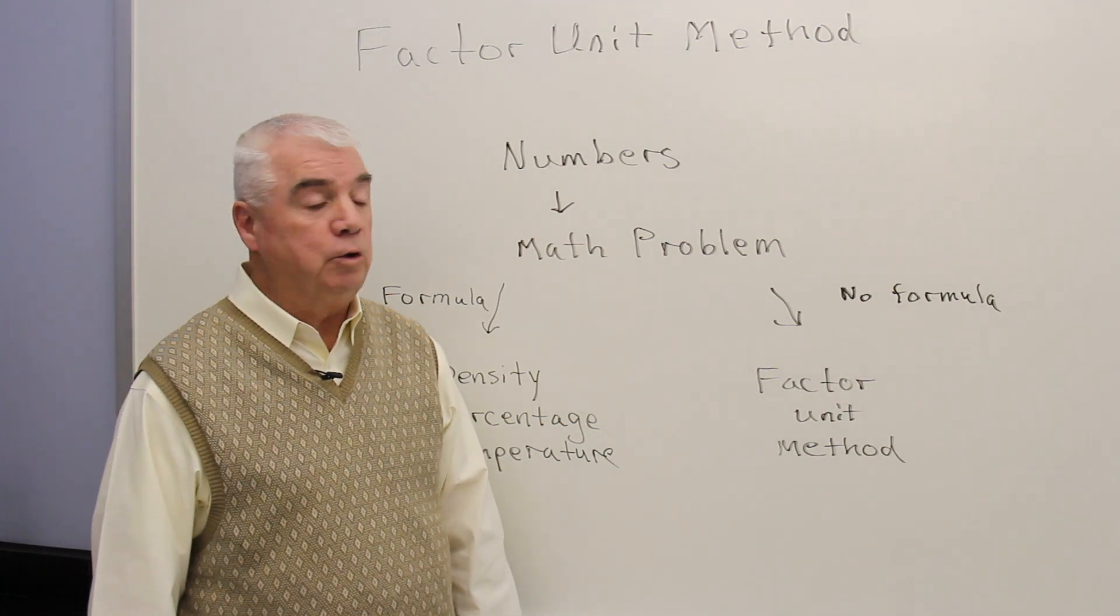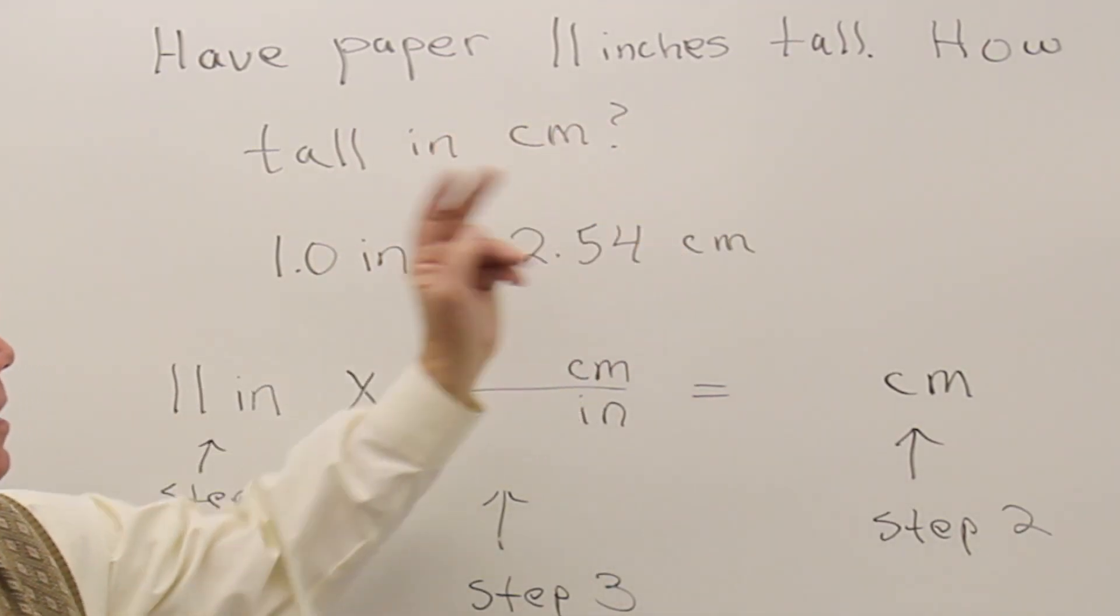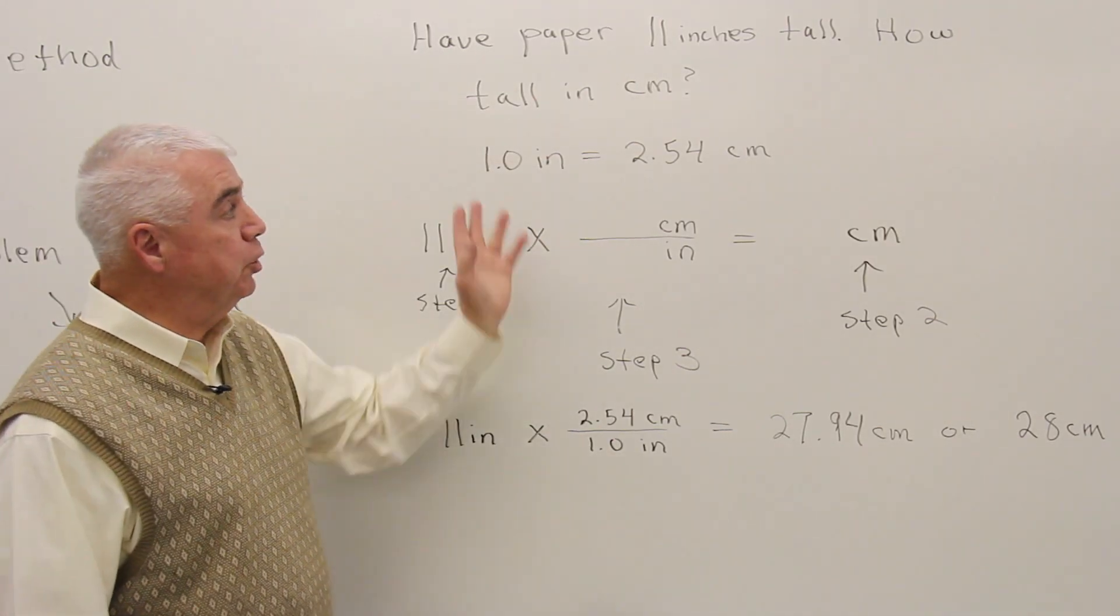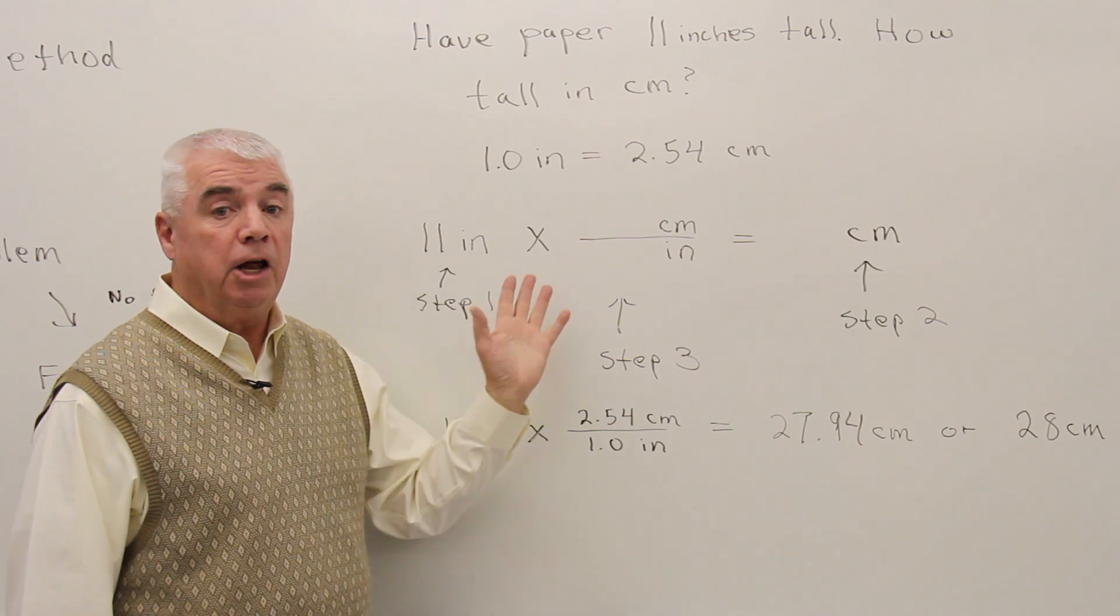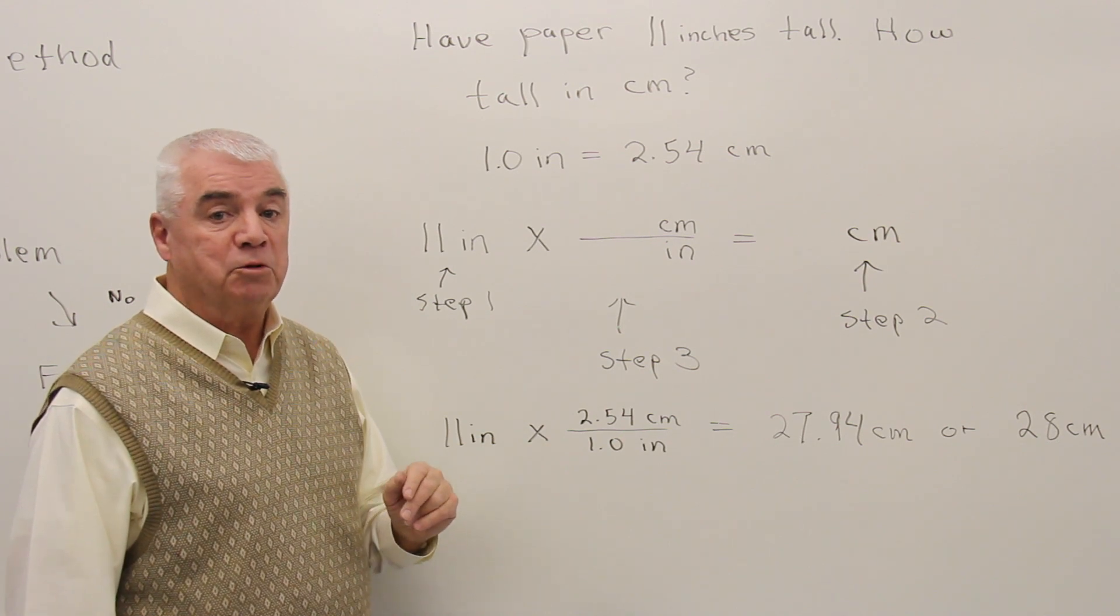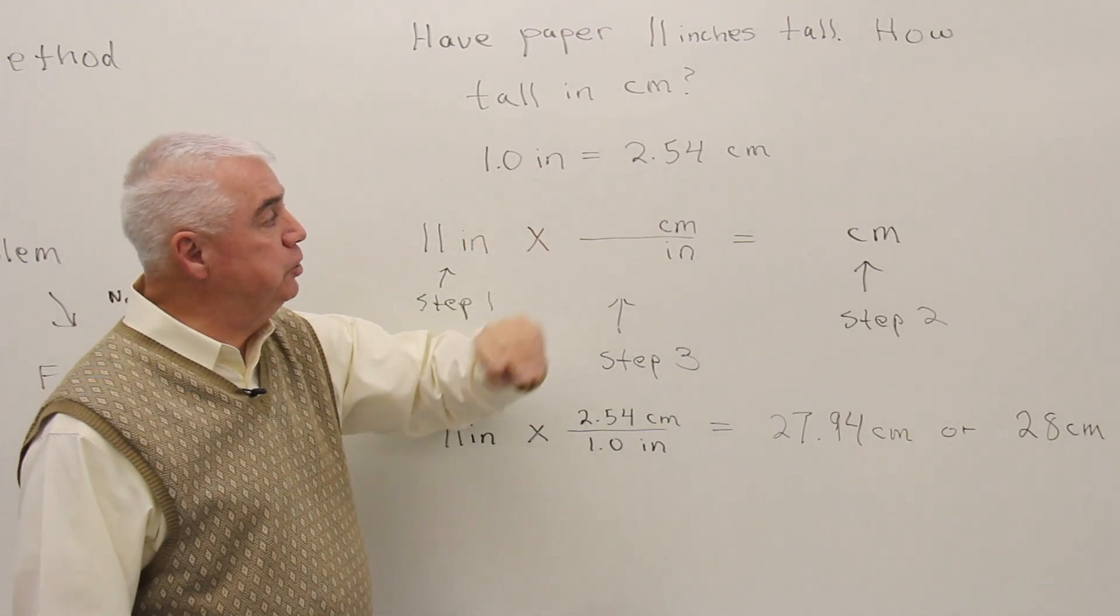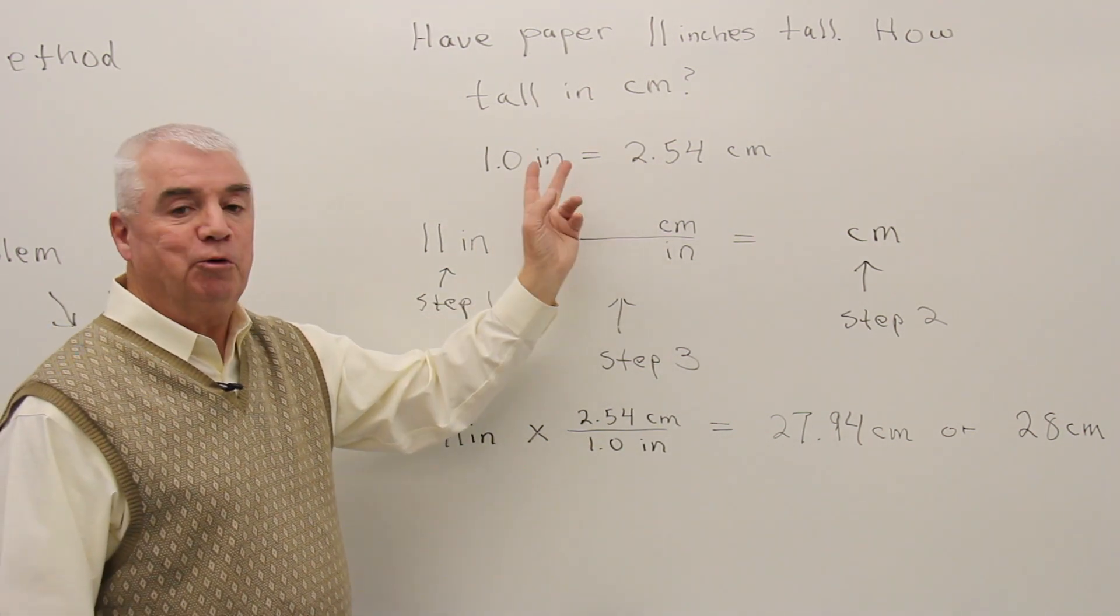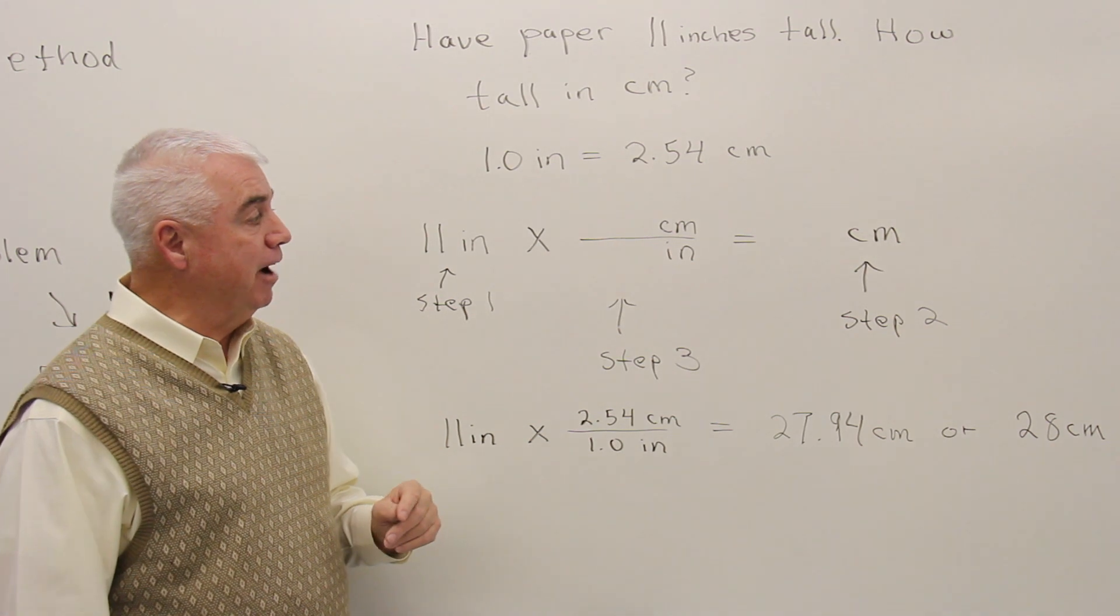Let's look at one and use the factor unit method. This question says, I have a paper that's 11 inches tall. How tall is the paper in centimeters? Well, that's a pretty simple problem, and I'm sure you could work it a couple of ways. But what I promise you is that if you use the factor unit method and let it become a habit, you'll not only be able to work simple problems, but very difficult problems too. We're given some additional information. We're told that 1.0 inches is equal to 2.54 centimeters. This is an equation. It represents a truth or a fact. And from a fact, we can derive factors that help us in the factor unit method.